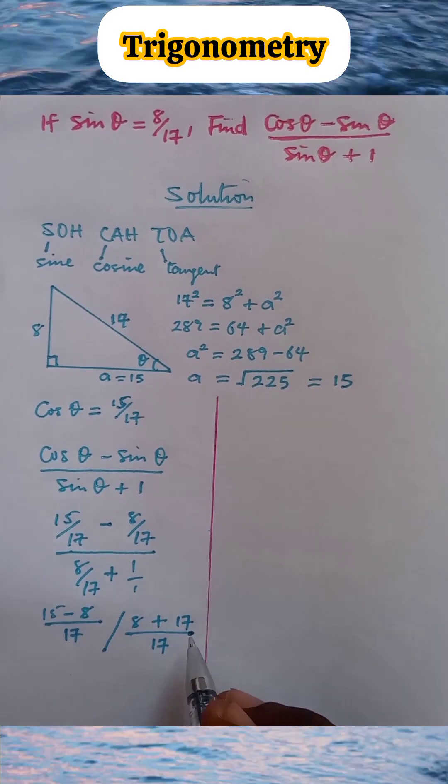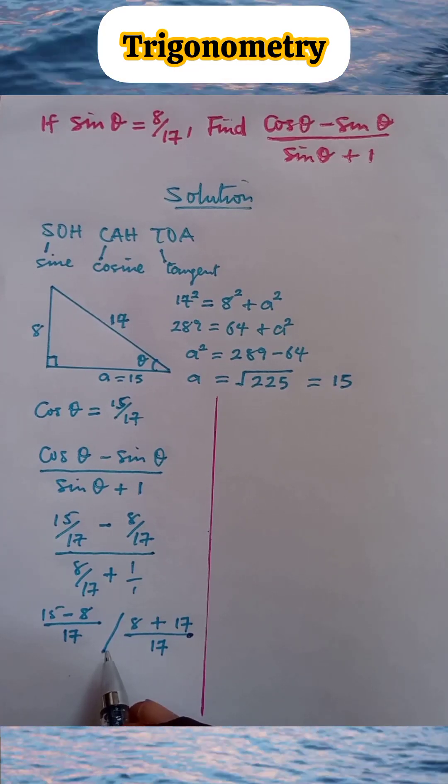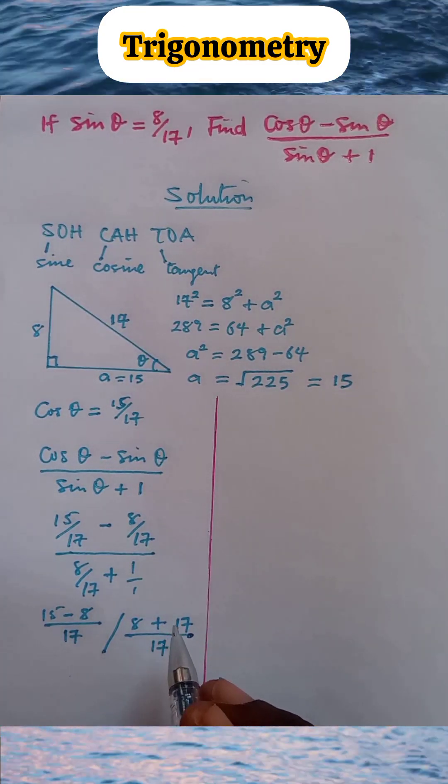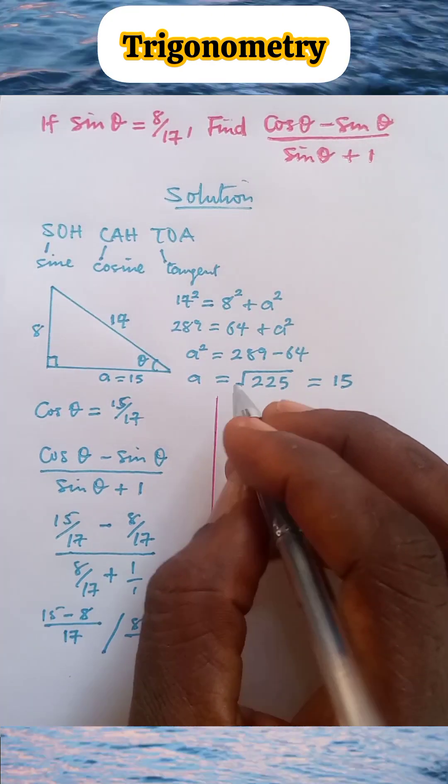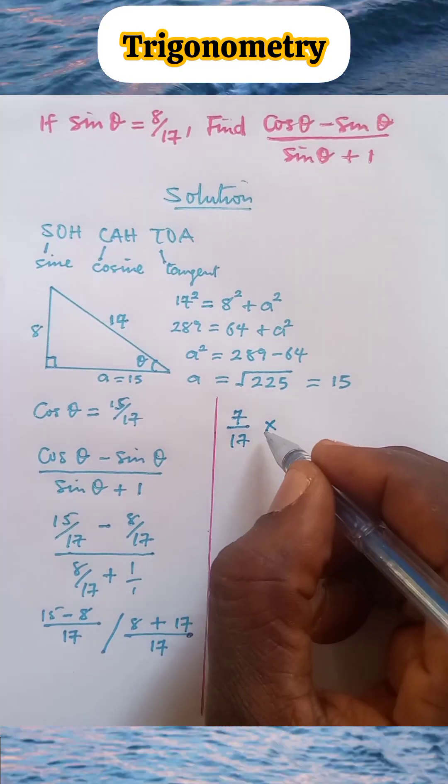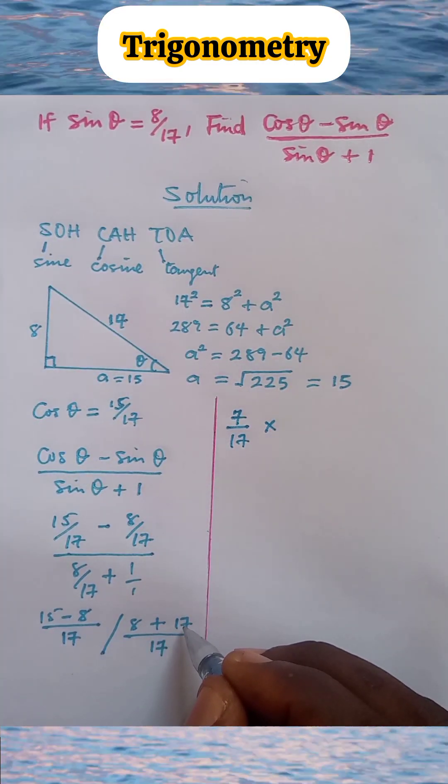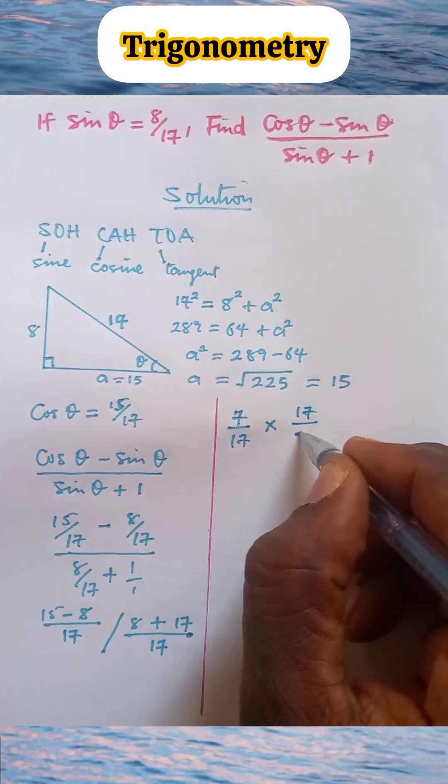So at this point, we are going to change this division sign to multiplication, and when that happens, this fraction will invert. So we have 15 - 8 = 7, so 7/17 times, now 8 + 17 = 25. So here we have 17, 17 have to come up now, over 25.